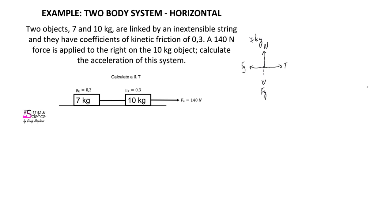For the 10 kilogram object, we have a force of gravity acting downward, a normal force acting upward, a tension force acting to the left, and since we have been given a friction coefficient, a friction force acting to the left. We also have an applied force acting to the right.